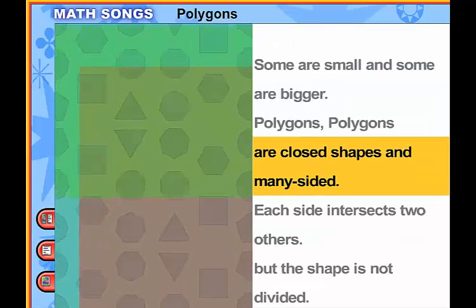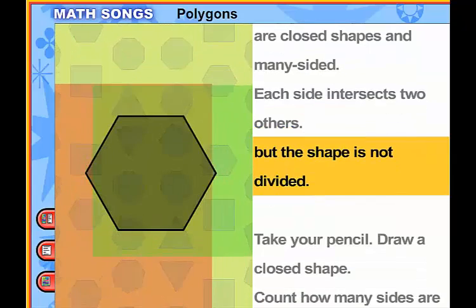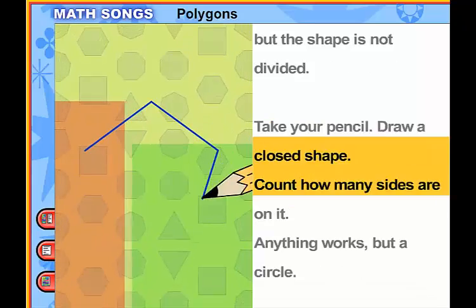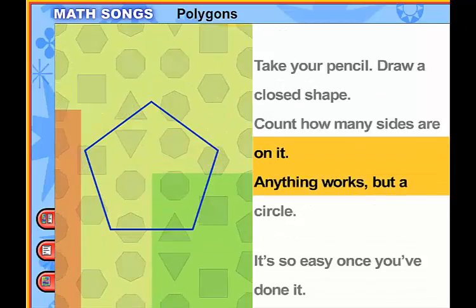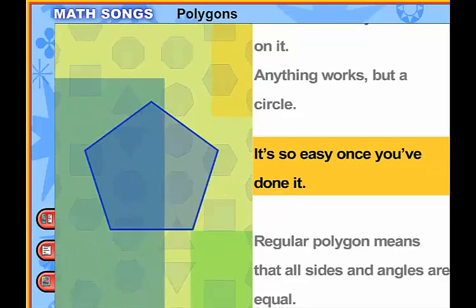Polygons are closed, shaped, and many-sided. Each side is next to others, but the shape is not divided. Take your pencil, draw a closed shape, count how many sides are on it. Anything works but a circle. It's so easy once you've done it.